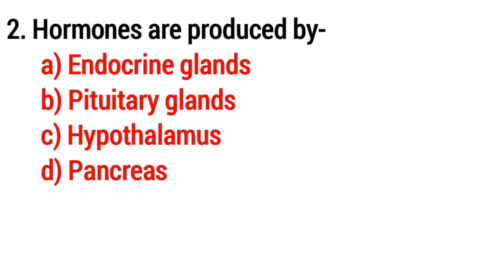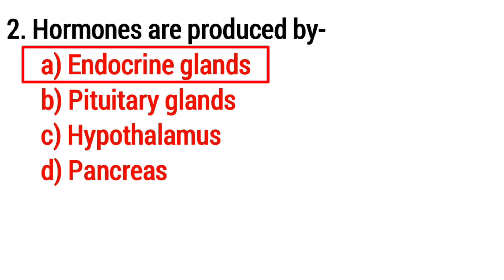Question 2: Hormones are produced by which of the following? The answer is Option A: endocrine glands.